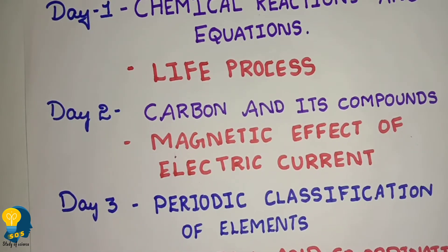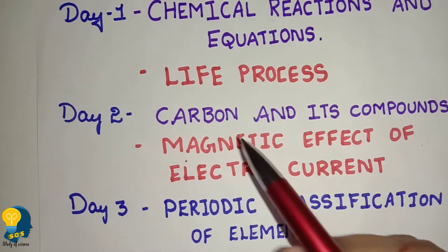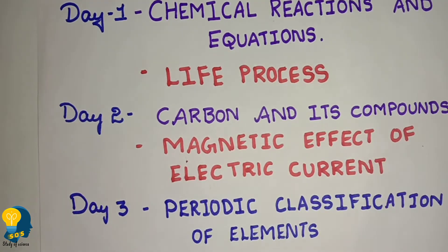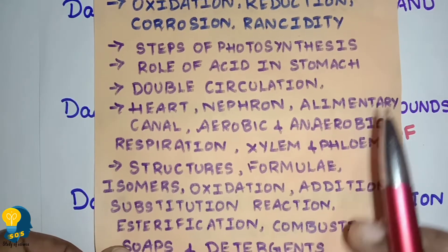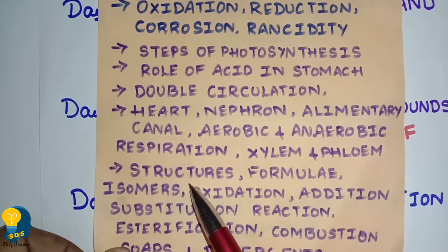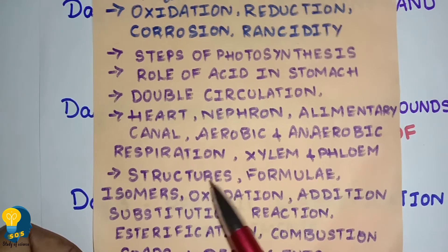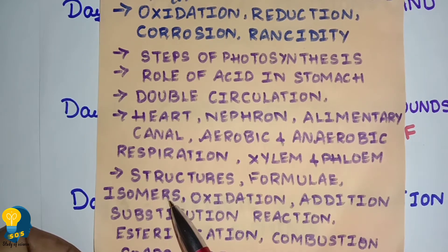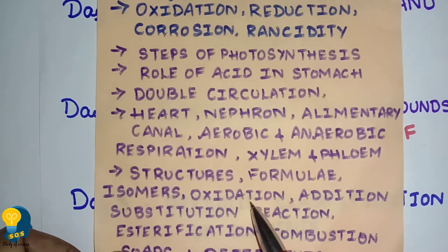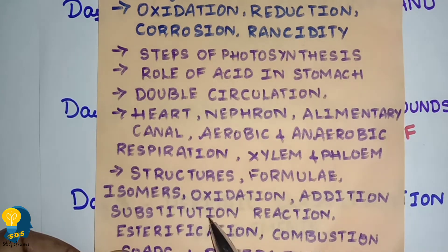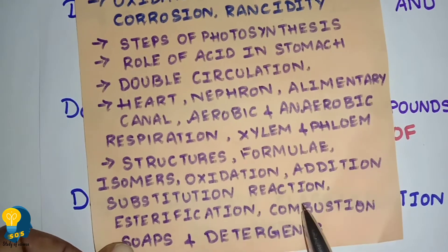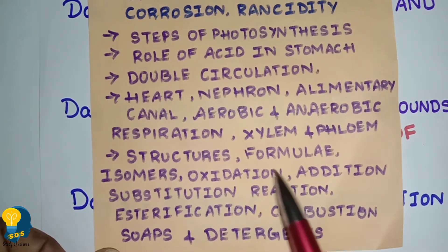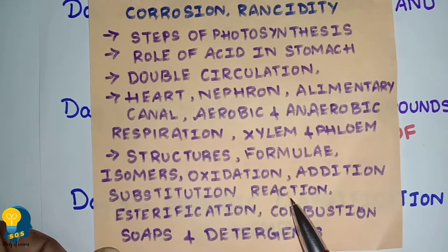Day two — start with Carbon and Its Compounds lesson. There are about 17 topics in Carbon and Its Compounds. You need to study structures of alkane, alkene, and alkyne along with their formulas. Next, study isomers — compounds having the same molecular formula but different structural formula. Also study oxidation reaction, addition reaction, substitution reaction, esterification, combustion reaction, and soaps and detergents. These concepts are covered in previous sessions — refer to those videos for Carbon and Its Compounds.